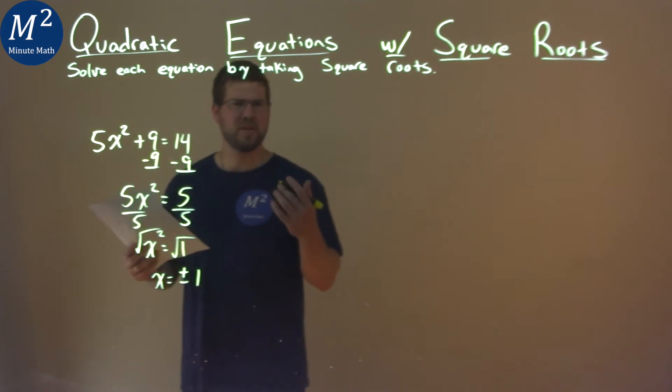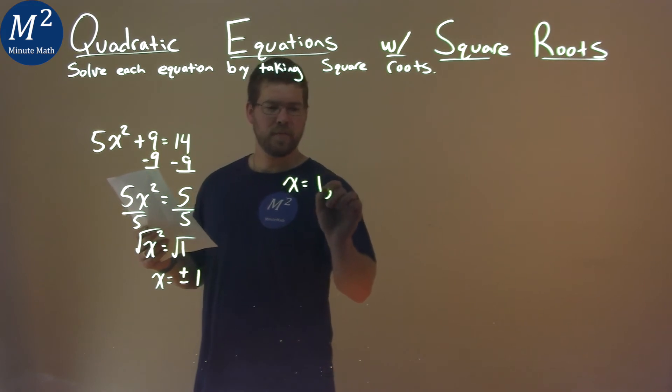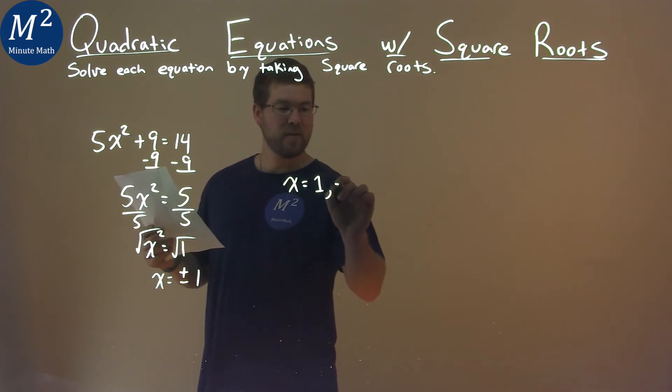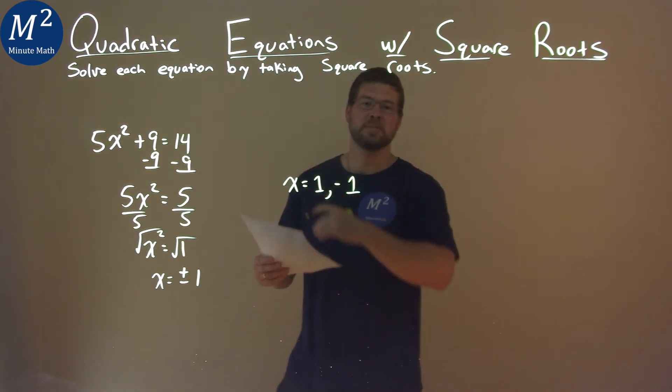So this is a pretty simple problem. Let's write it out here. Plus or minus means x is a positive 1 and a negative 1, and that is actually it. That is our final answer here.